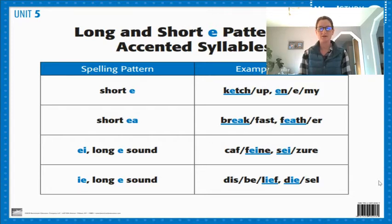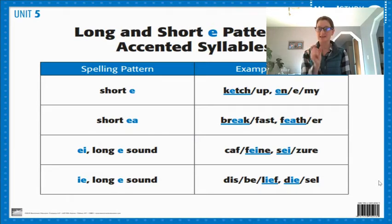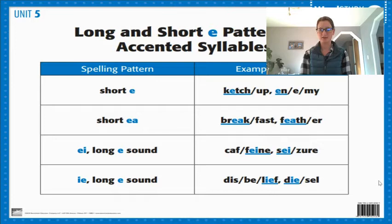So as you remember, we are looking for E's. The short E has that 'eh' sound and it might just be a single E in a syllable. For example, in the word ketchup, that first syllable has that 'eh' sound. The same for the word enemy — it has that 'eh' sound from the letter E.